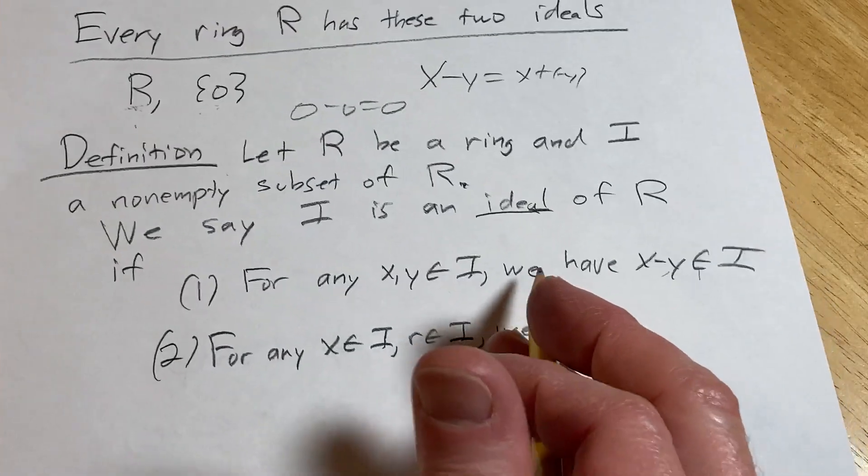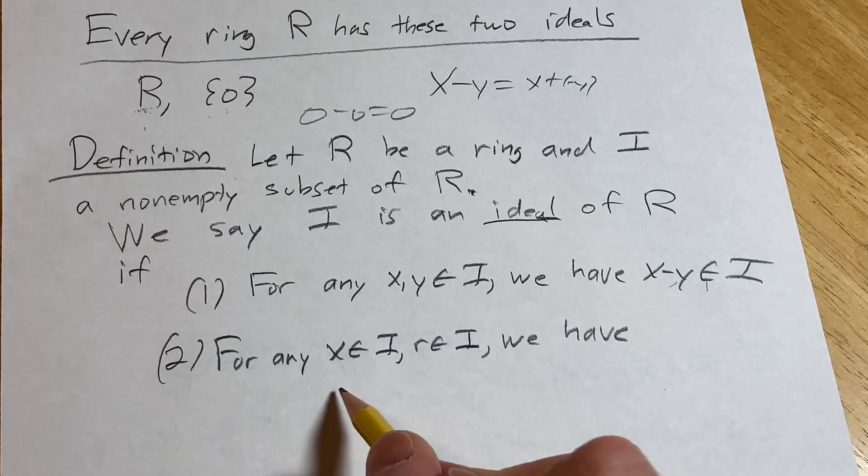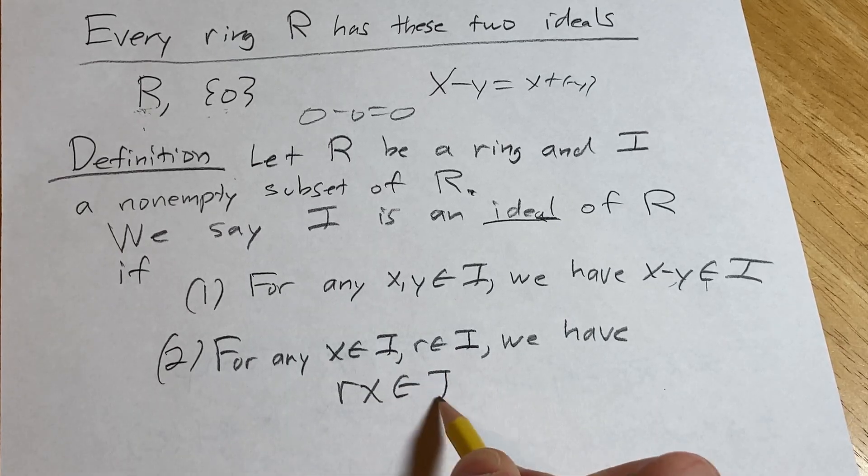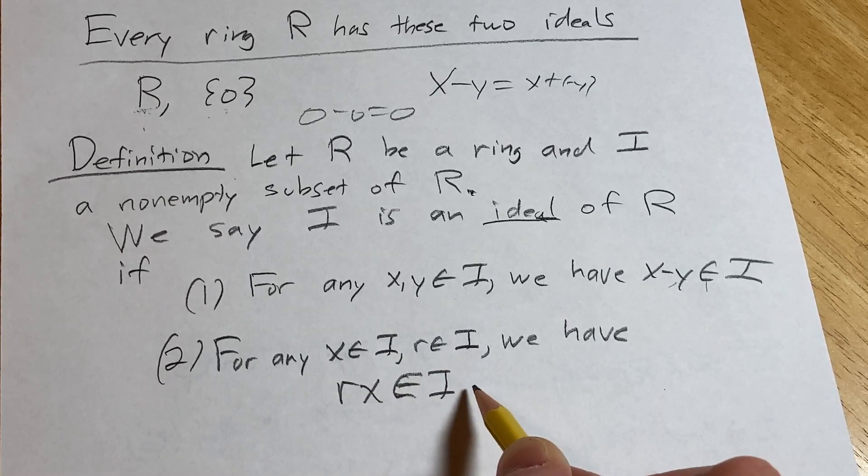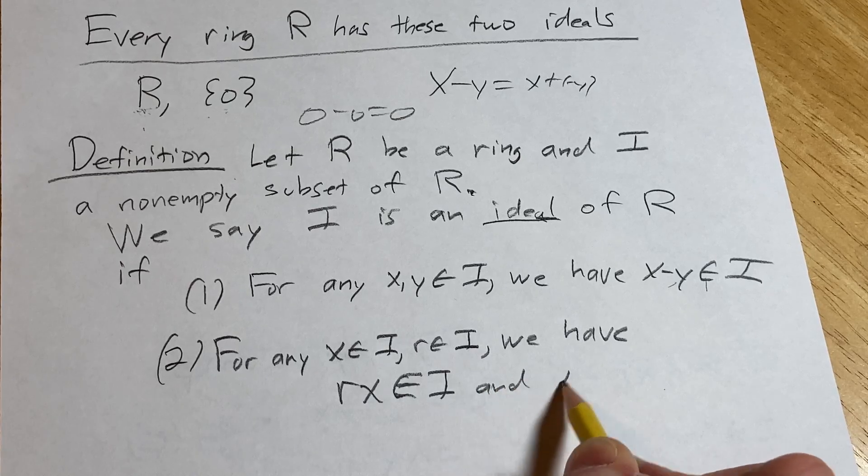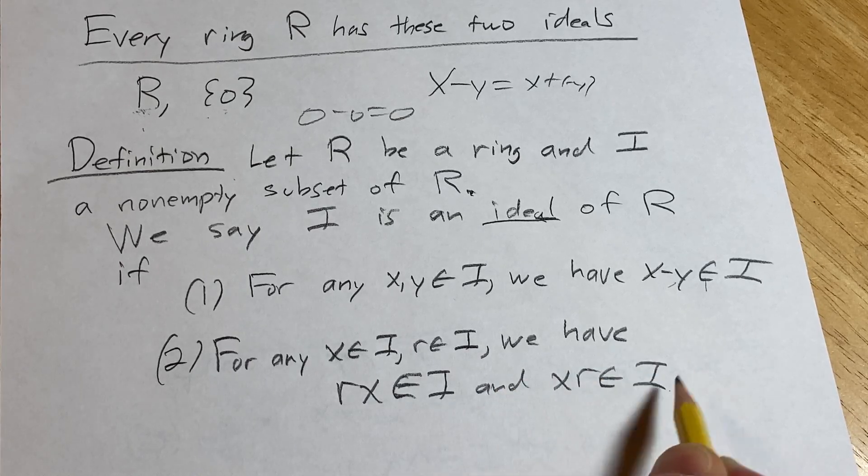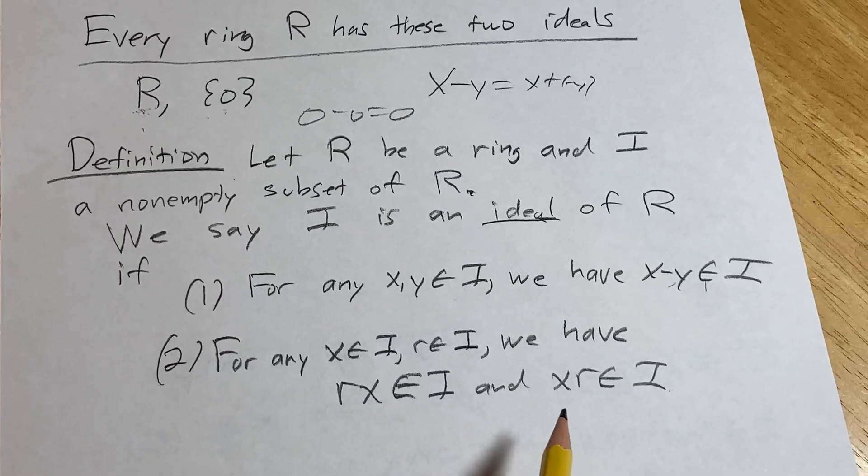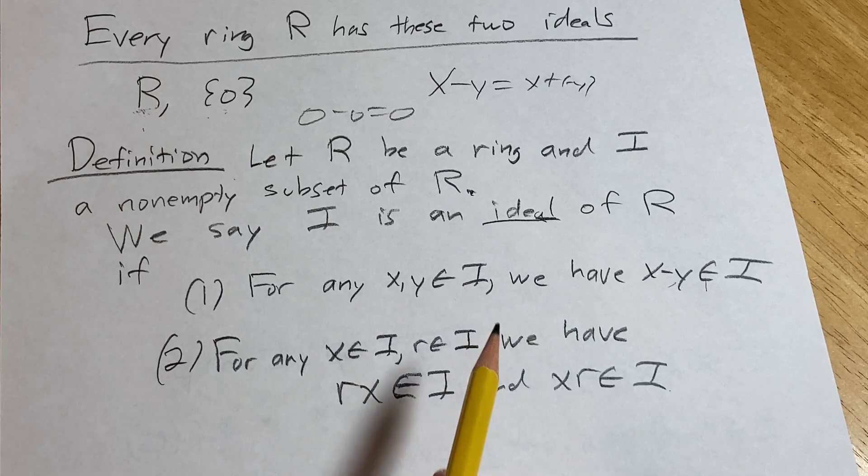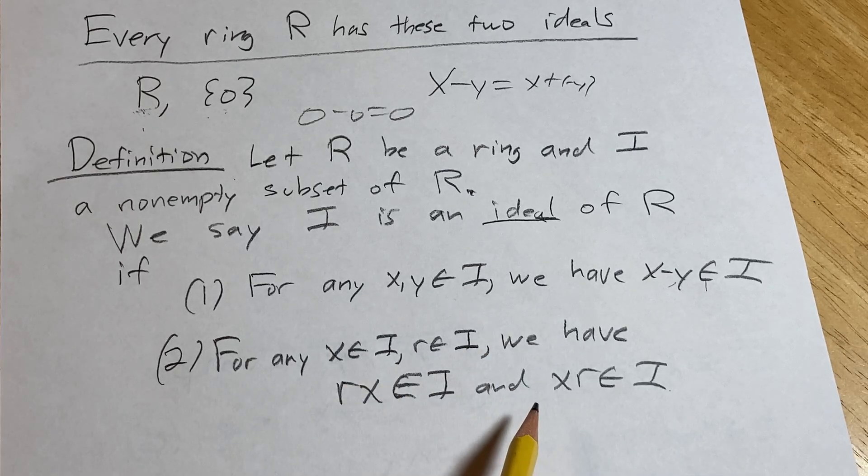We're going to have rx in I and xr in I. We're going to have both, right? Always. And if it's a commutative ring, it's a non-issue, right?